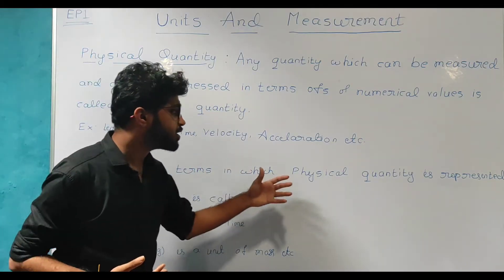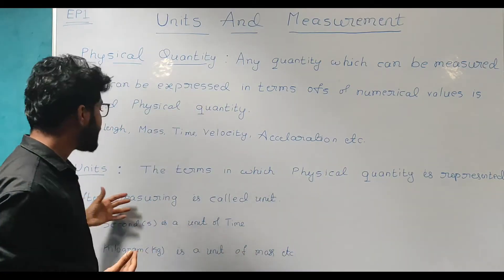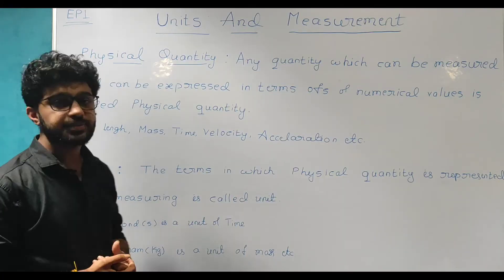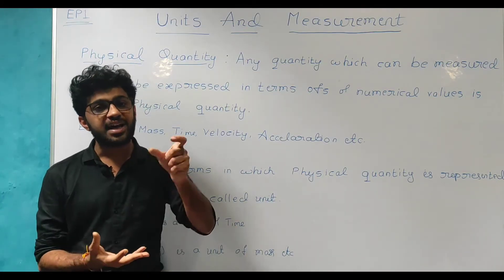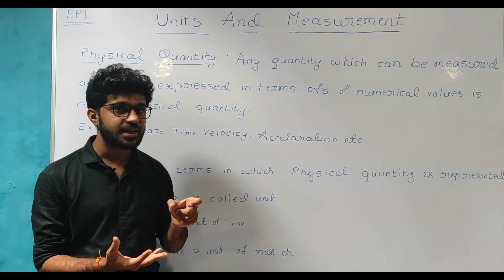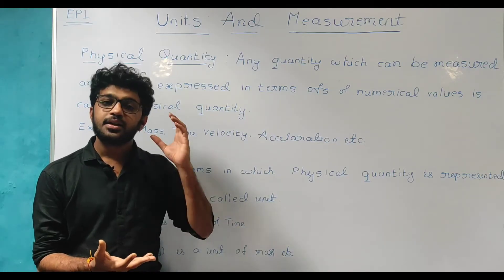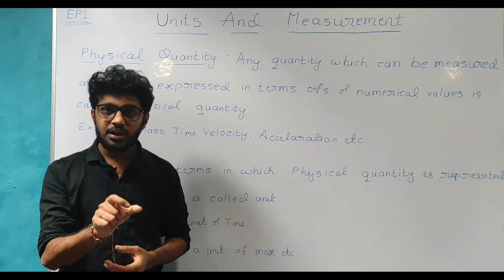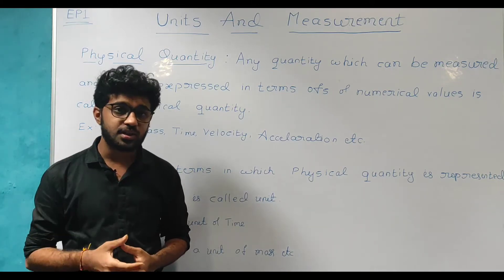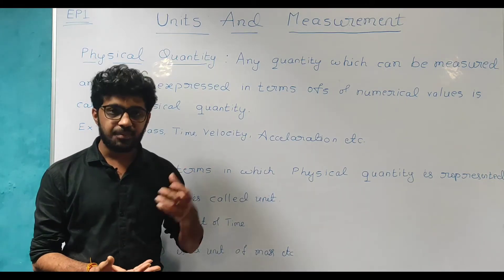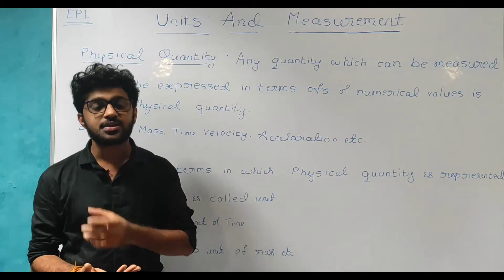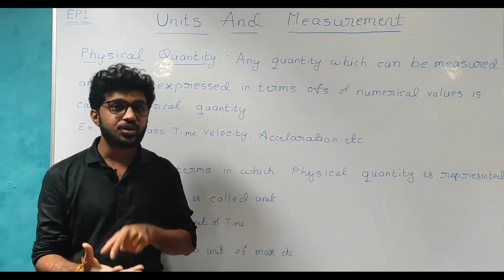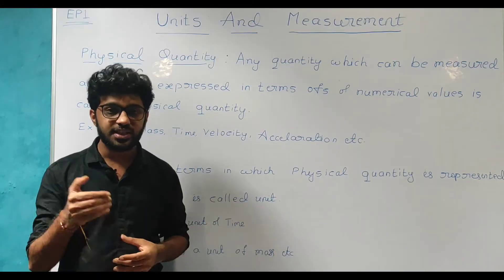The terms in which a physical quantity is represented after measuring are called units. For example, we represent time in seconds, length in meters, kilometers, or centimeters, and time in seconds, minutes, or hours. We will represent SI units in more detail in the next part, where kg represents mass.